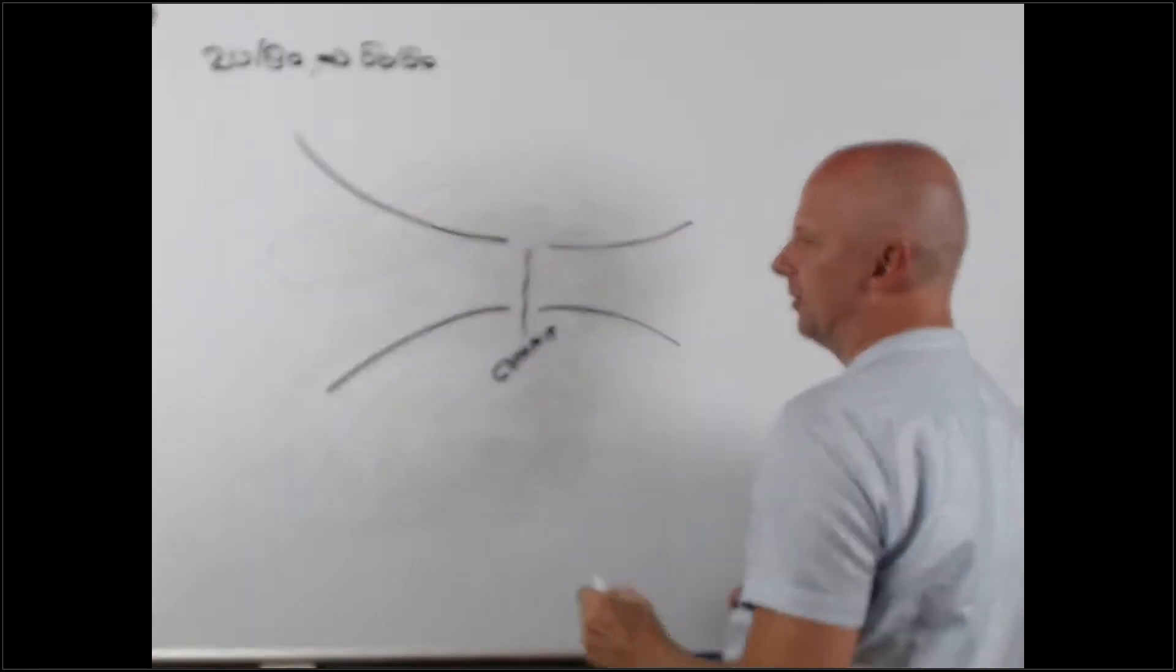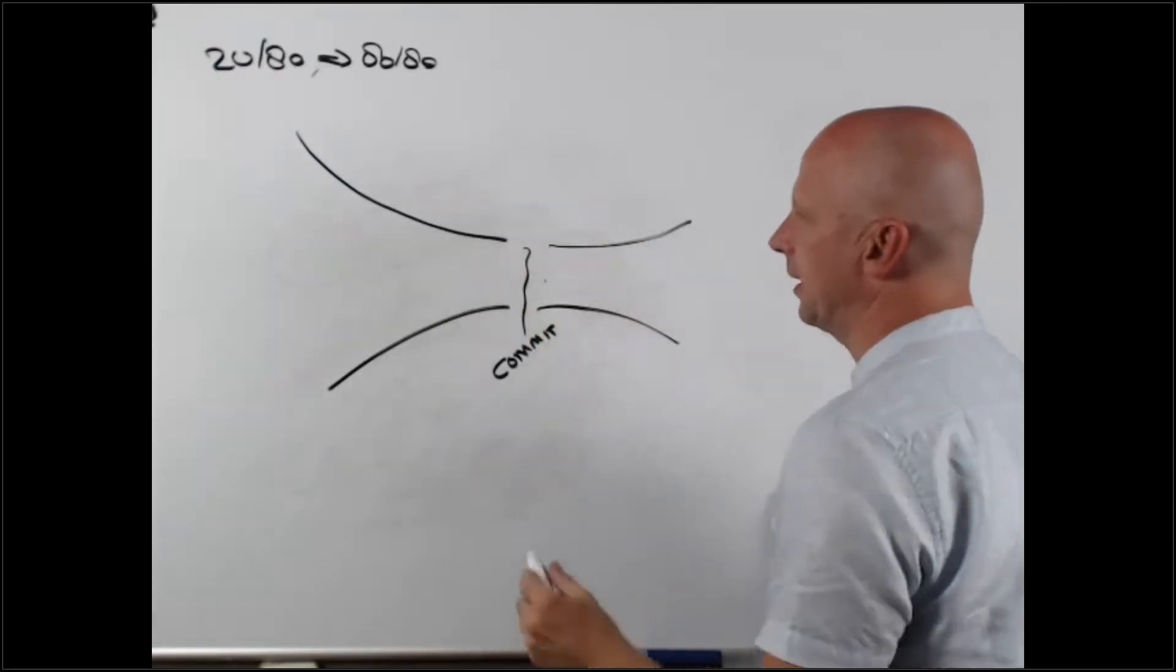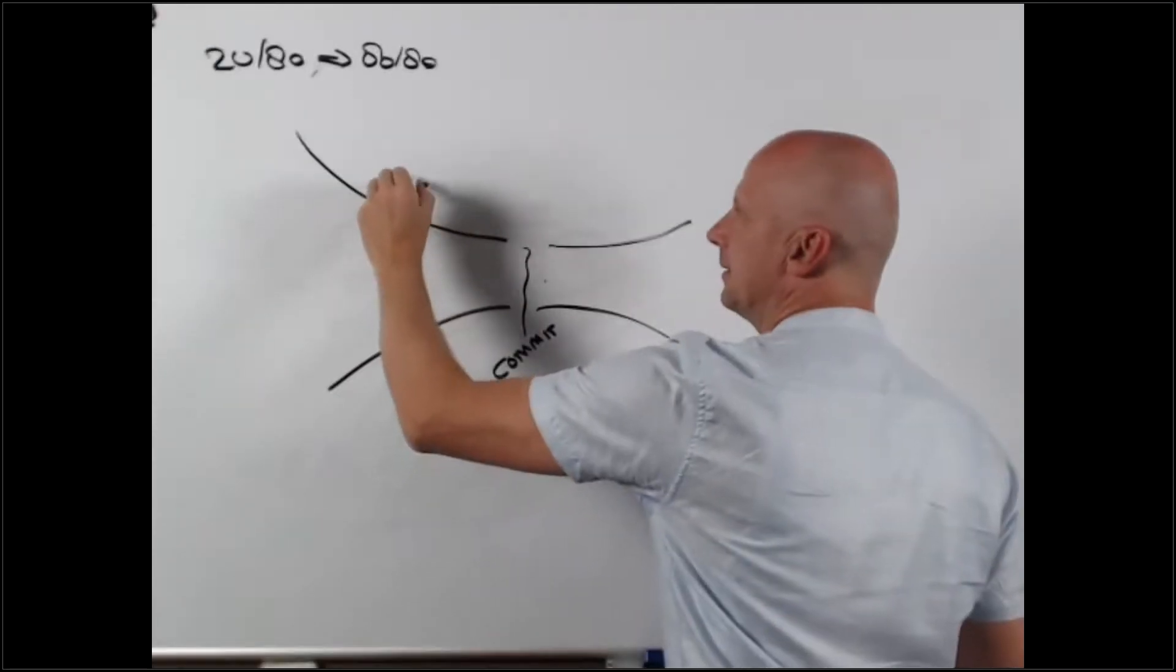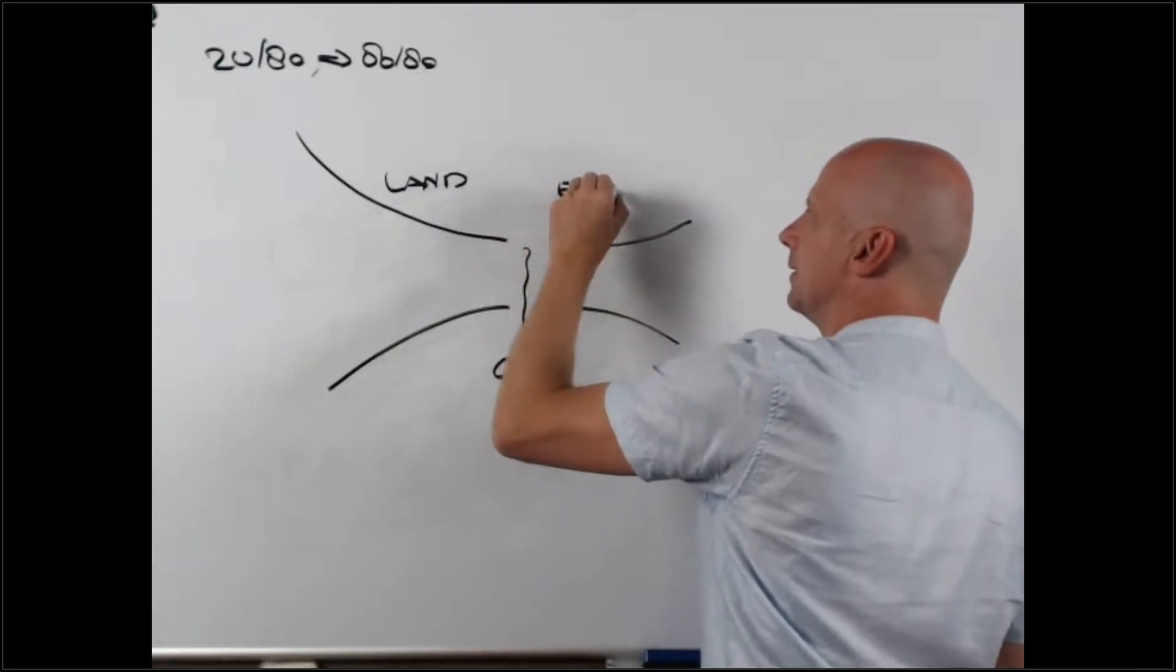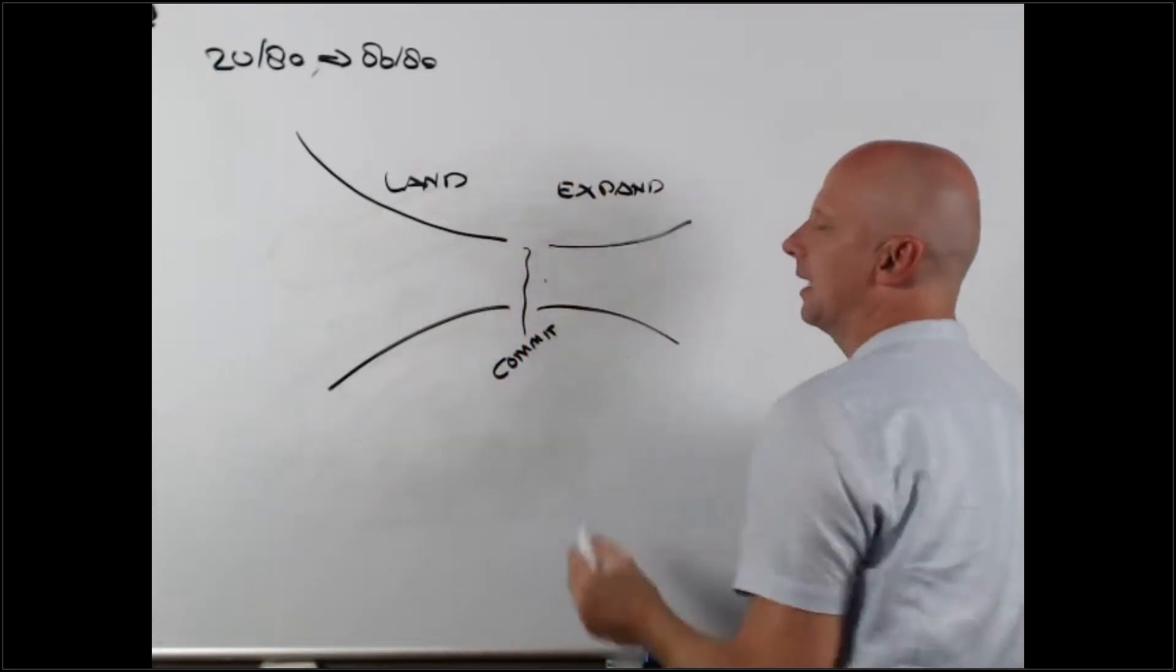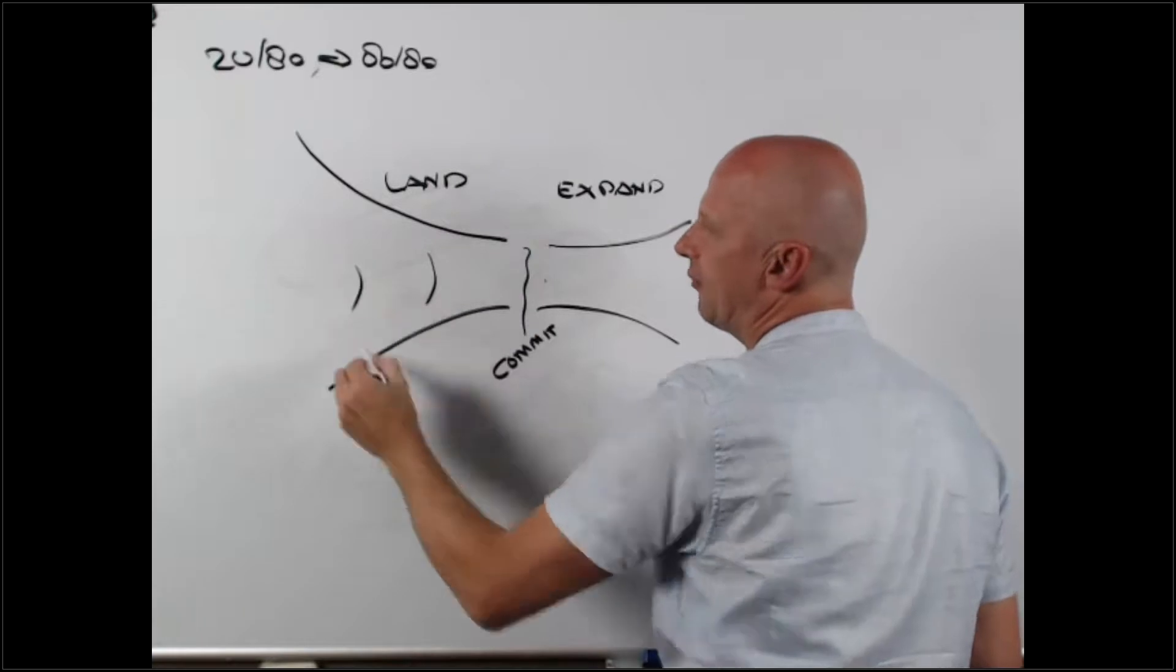The second part of the funnel, what we see down here, we often call this 'land' and we call this 'expand'. In the land boat, we create three phases.